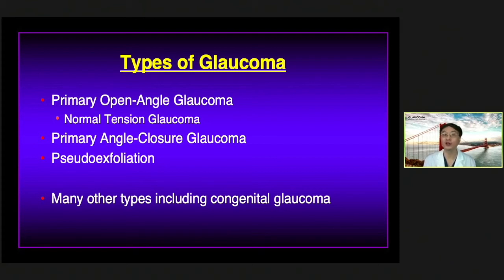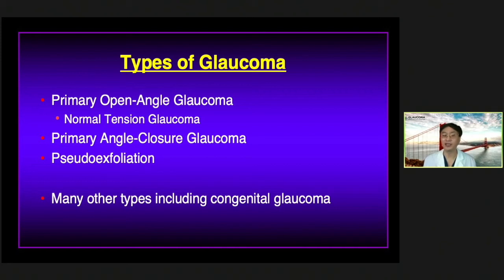Pseudo-exfoliation is also a very common type of glaucoma in which white material is released in the eye and clogs the area where fluid drains out, causing elevated intraocular pressure. A special mention goes to congenital glaucoma — a form the child is often born with or develops soon after birth. It is very devastating because the pressure is often very high, causing eye enlargement and a white cornea, and since it affects children at such an early age it is much more damaging over the patient's lifespan.